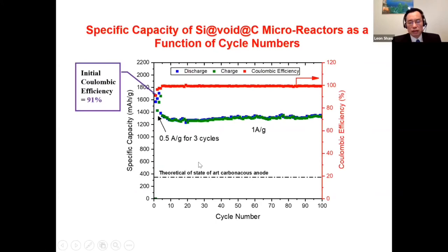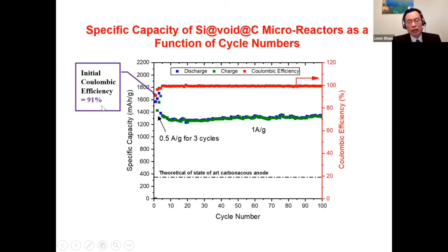The cycle stability data shows over 100 cycles at 6 mA per gram current density with almost no capacity decay. The initial coulombic efficiency is very high at 91%, because our powder size is 200 to 300 nanometers with nano silicon domains — very different from typical silicon nanoparticles, which usually have initial coulombic efficiencies of only 75 to 80%.